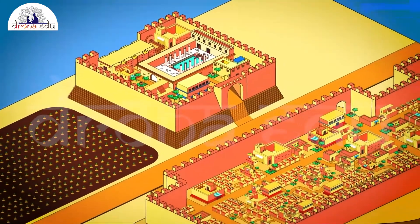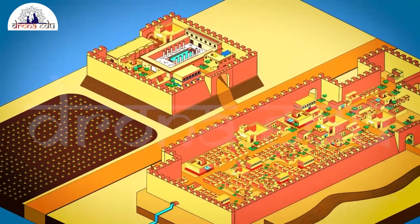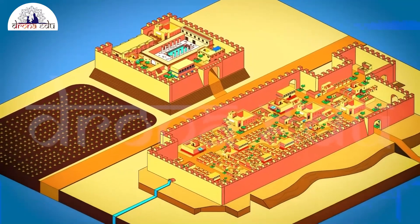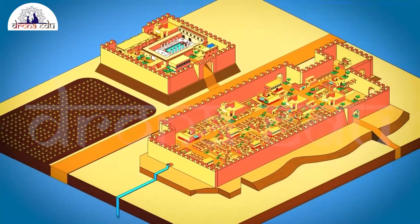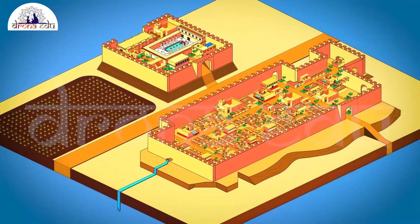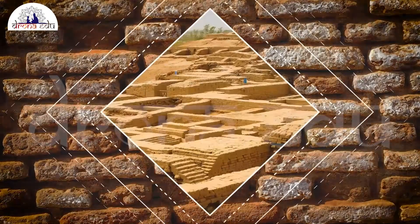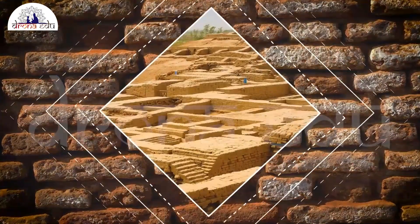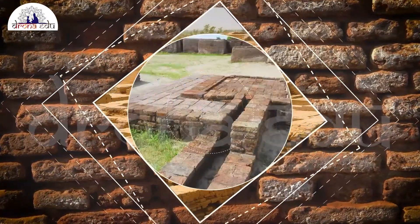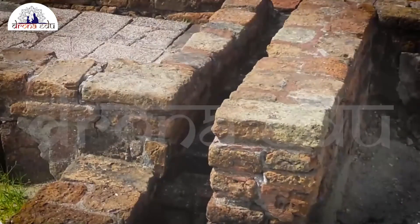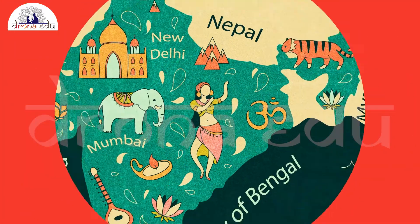This shows that the town dwellers were skilled in mensuration and practical arithmetic. The bricks used for construction were kiln-fired and the ratios of length, breadth, and thickness were found to be 4:2:1.